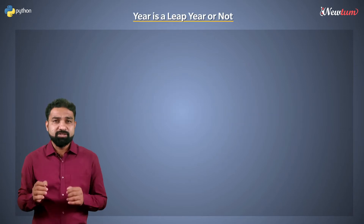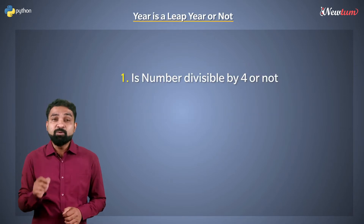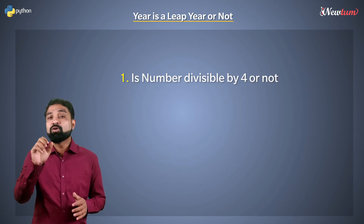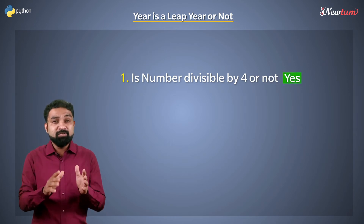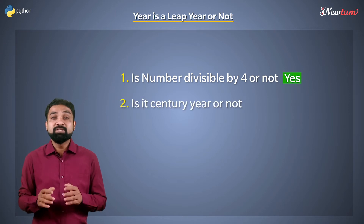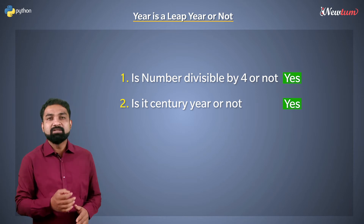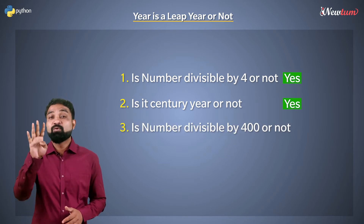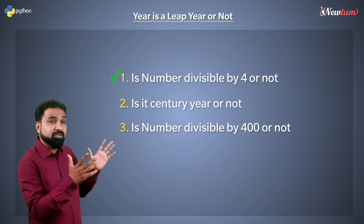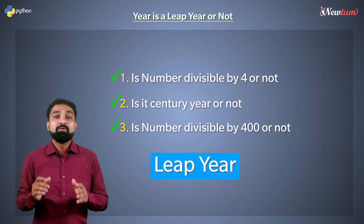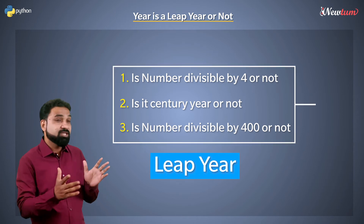As per the definition, first we need to check whether the number is divisible by 4 or not. If it is divisible by 4, then we need to check whether it is a century year or not. If it is a century year, we need to confirm whether it is divisible by 400. If all these conditions are correct, then the year is a leap year. Well, this is our logic.